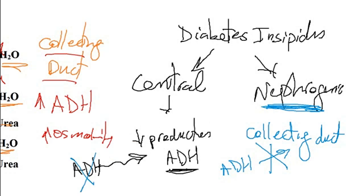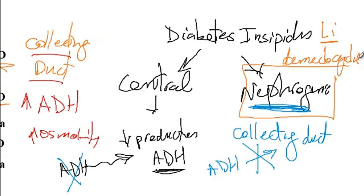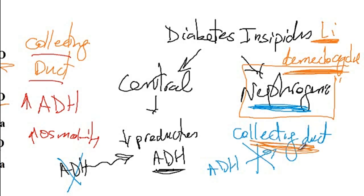Two drugs that cause nephrogenic diabetes insipidus are lithium — used to prevent relapse in bipolar disorder — and demeclocycline, an antibiotic with ADH antagonist activity. Both lithium and demeclocycline cause nephrogenic diabetes insipidus by interfering with the function of ADH at the level of the collecting duct.